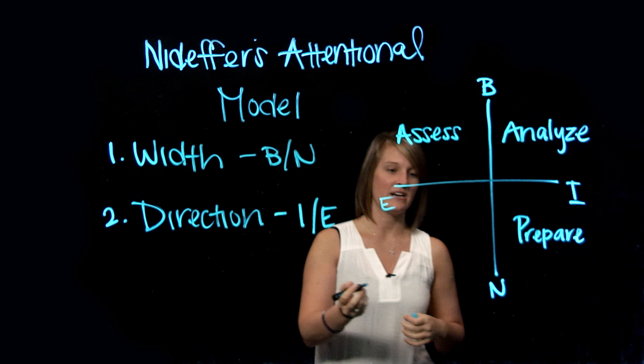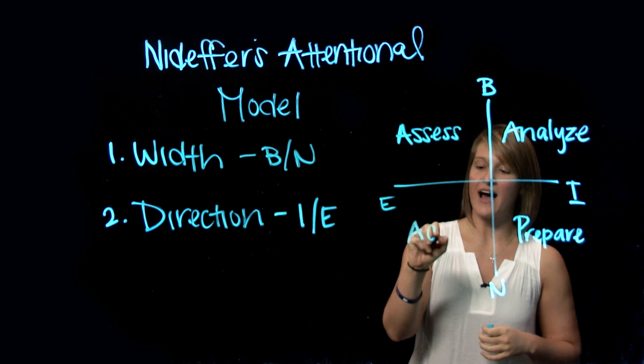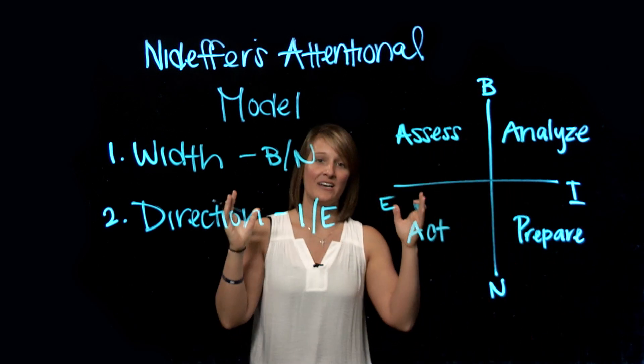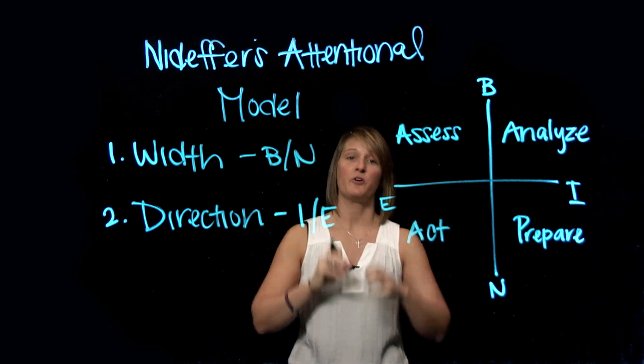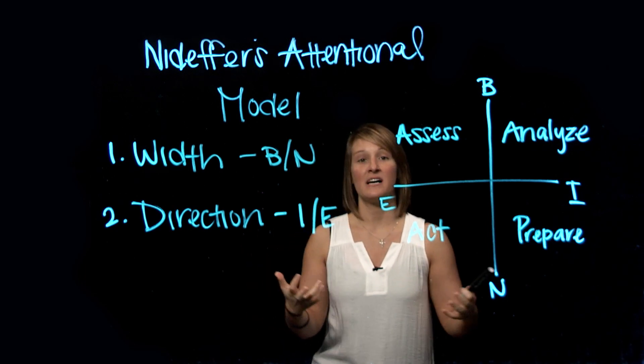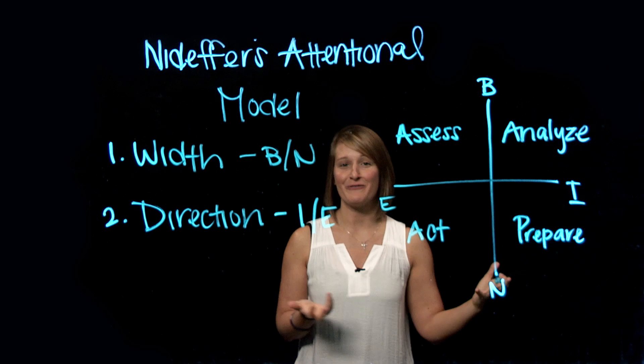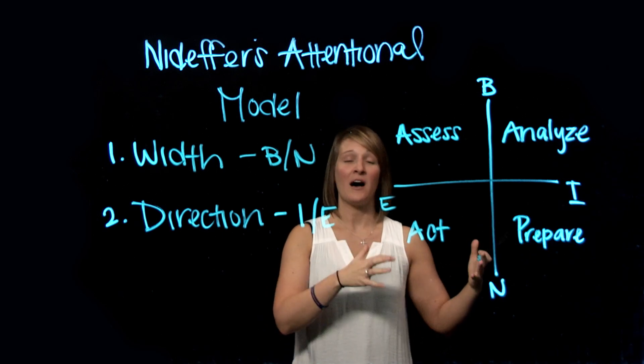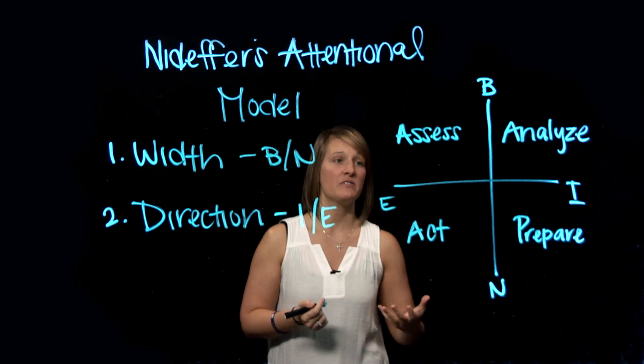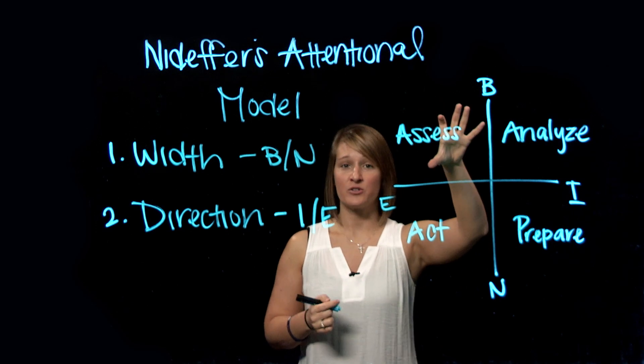And then there's external narrow. And this is where it said that we act. Again, one or two things, but we're focusing back outside of ourselves. So an example I love, because I'm biased football is my favorite sport, I think about a quarterback. So at any given point, a quarterback might be external broad.